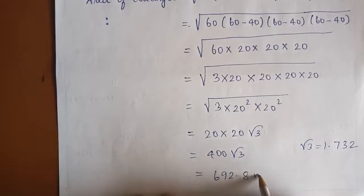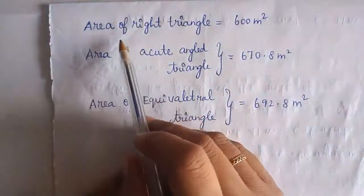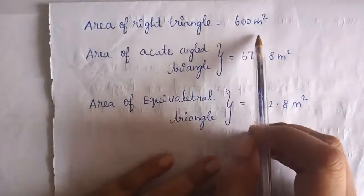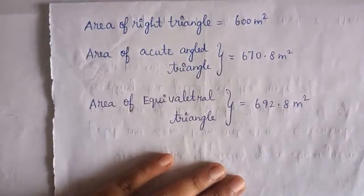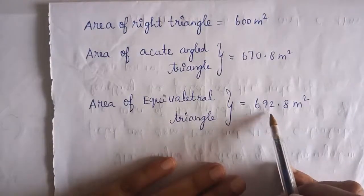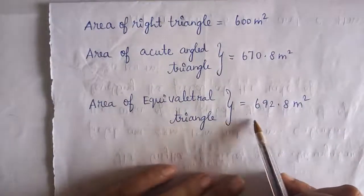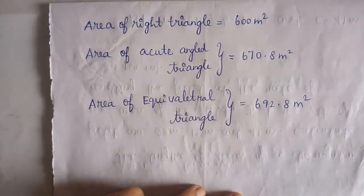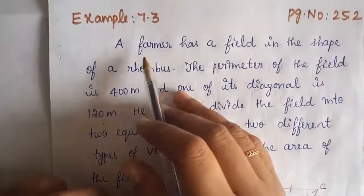Comparing the three areas: the right-angled triangle = 600 m², the acute-angled triangle = 670.8 m², and the equilateral triangle = 692.8 m². The area of the equilateral triangle is the largest at 692.8 m², so the equilateral triangle plot is more spacious compared to the other two.